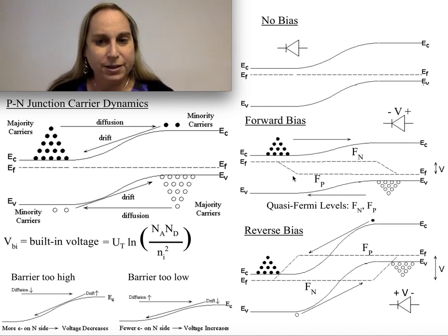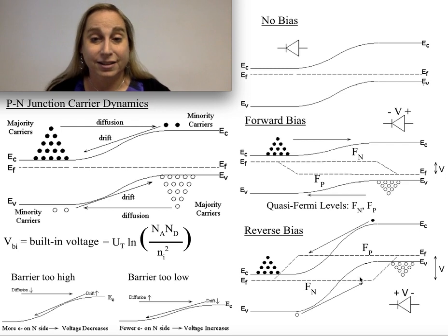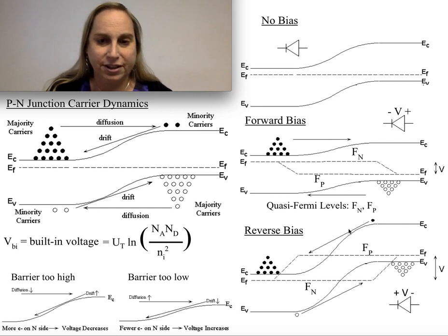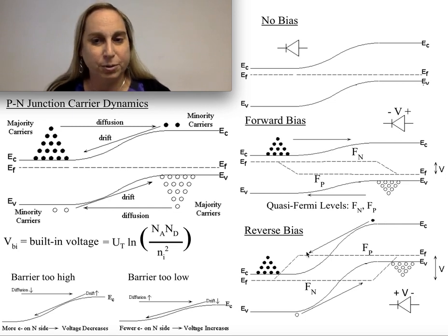In reverse bias, what have I done? In forward bias, I've made the barrier smaller. In reverse bias, I've made the barrier larger. So, now it means that the diffusion almost goes away. And all I'm left with is just the drift transport down.